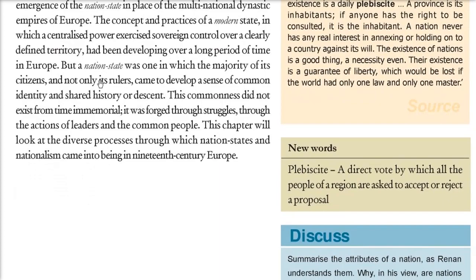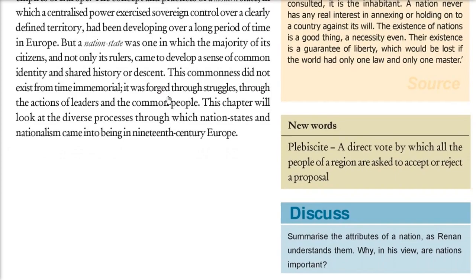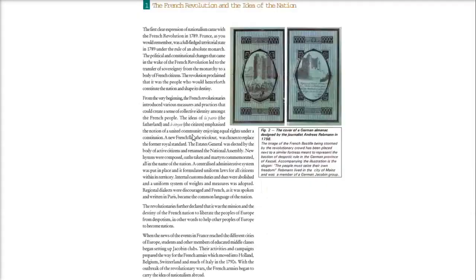The nation state was one in which citizens are important — not only the ruler — and all share a common history. This sense of oneness did not exist from time immemorial; it came from struggles and actions of people and leaders. We will see the diverse processes and events through which nation states and nationalism came into being in 19th century Europe.